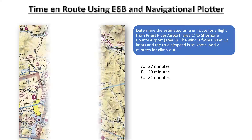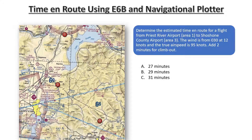Determine the estimated time on route for a flight from Priest River Airport, Area 1, to Shoshone County Airport, Area 3. The wind is from 030 at 12 knots and the true airspeed is 95 knots. Add 2 minutes for climb out. Is it A - 27 minutes, B - 29 minutes, or C - 31 minutes?